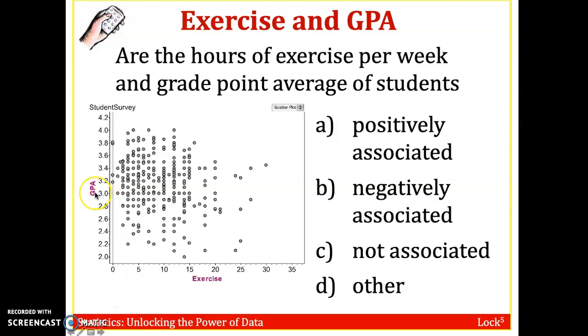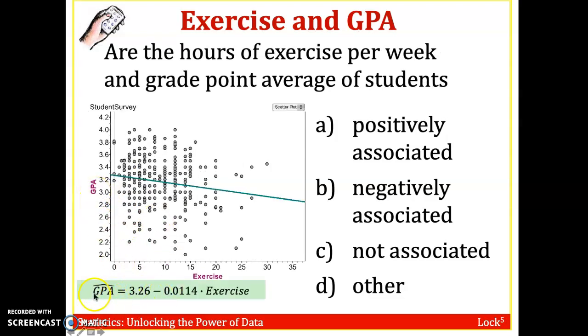All right, so let's plot the line of best fit. We've got GPA is 3.26 minus 0.0114 times exercise. So we have a line of best fit. In fact, any technology will do this. But this looks kind of chaotic. I don't see a very strong trend going up or going down. It's like a little shotgun blast, kind of. I would say that this is not associated. There's very, very little association that we're seeing between GPA and how much someone exercises.